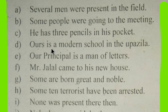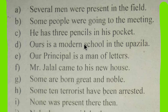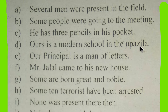Next sentence: 'Ours is a modern school in the upozela.' 'Ours' is the subject, 'is' is a verb, 'school' is a noun, and 'modern' is an adjective because it is modifying the noun. 'In' is making a relationship between two nouns — 'school' and 'upozela.'